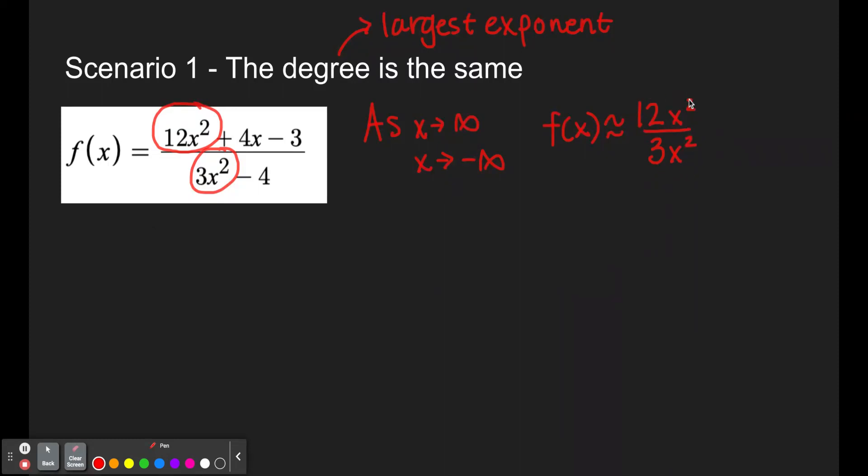And we can simplify this. 12 divided by 3 is 4, x squared over x squared makes a giant 1, so this is going to be 4.